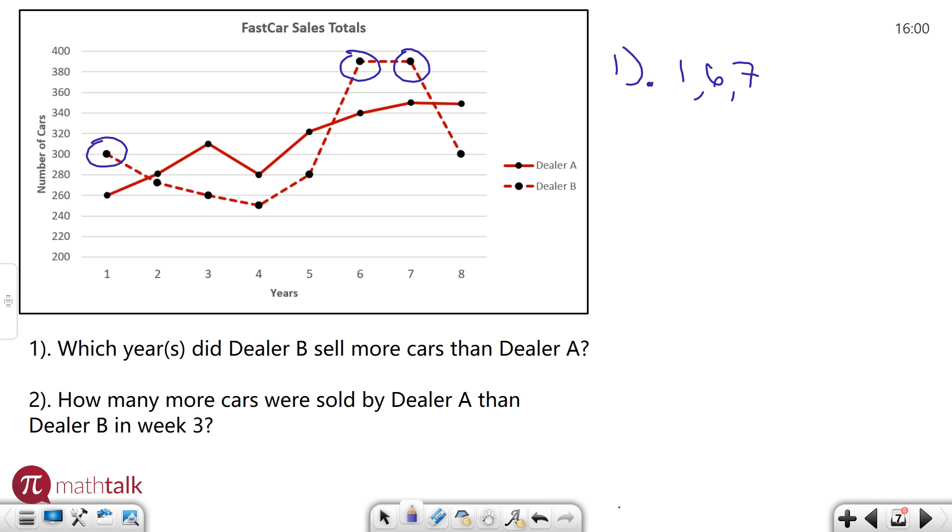And then we need number two, the question. How many more cars were sold by dealer A than dealer B in week three? So that's a good question because it means we can focus directly on week three. The rest of the data doesn't matter. So week three is right here and I want to look just at those two numbers.